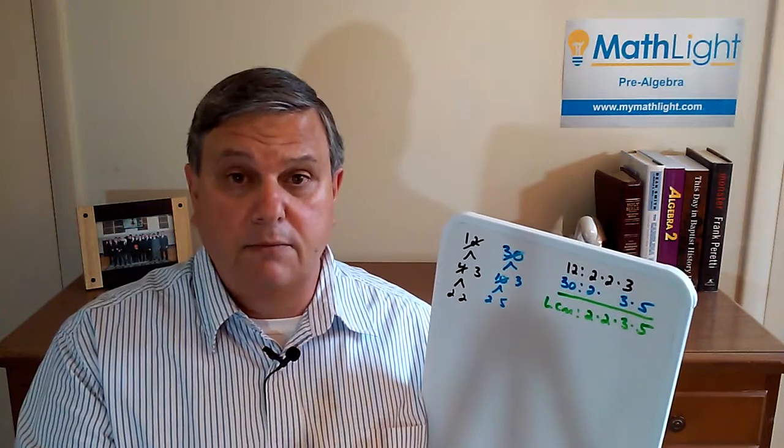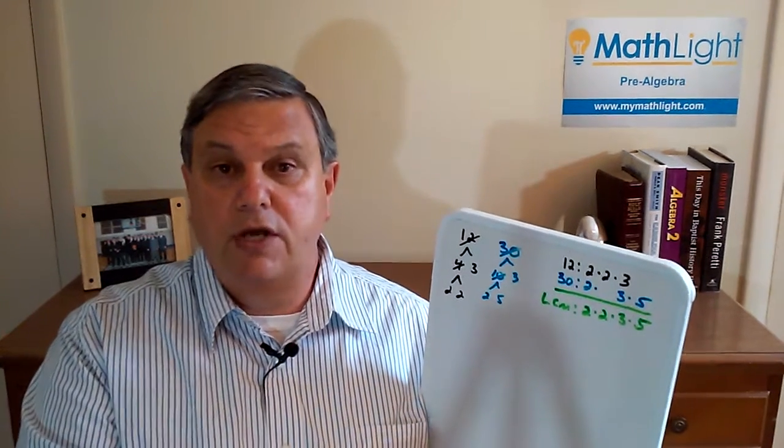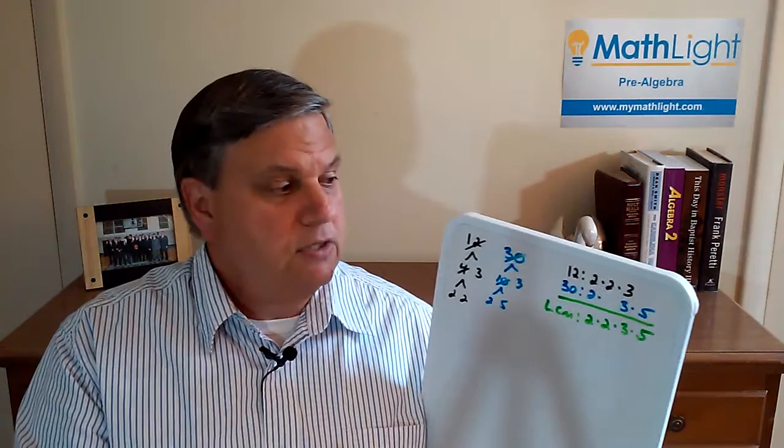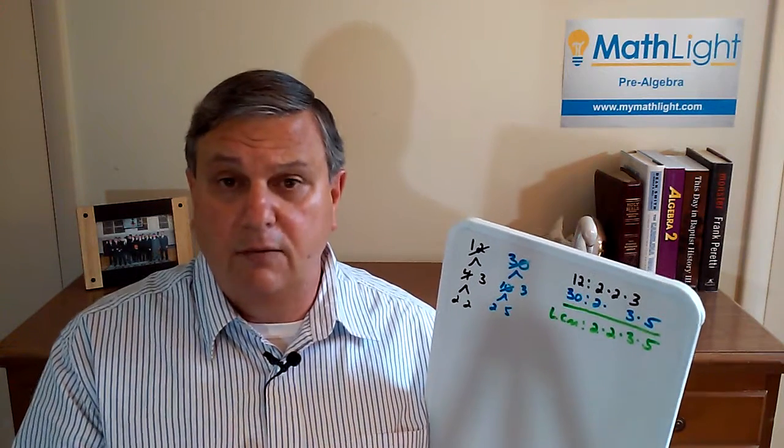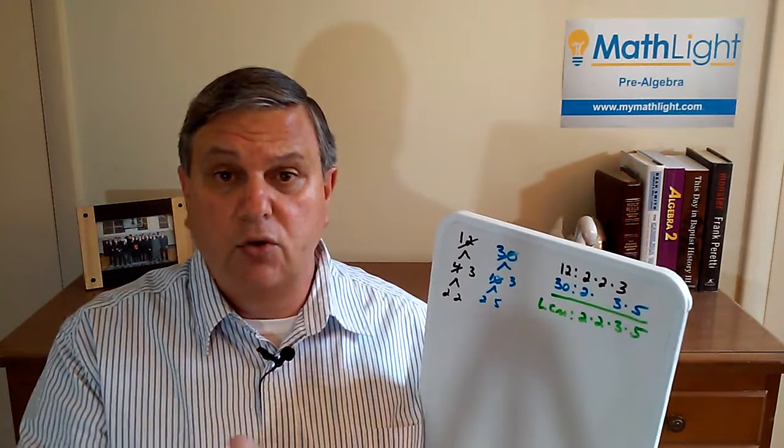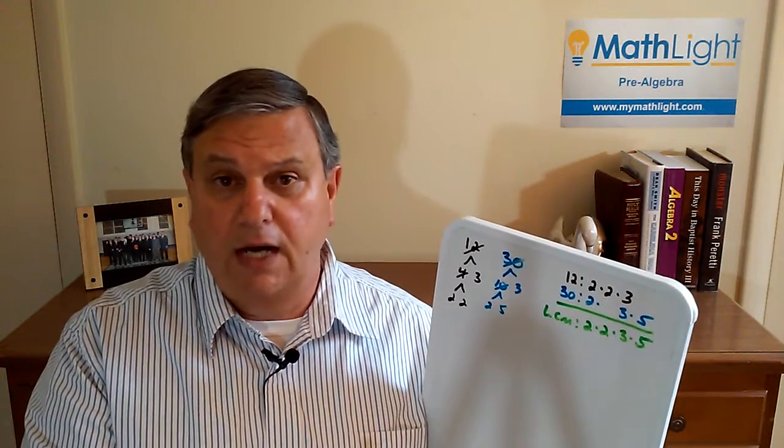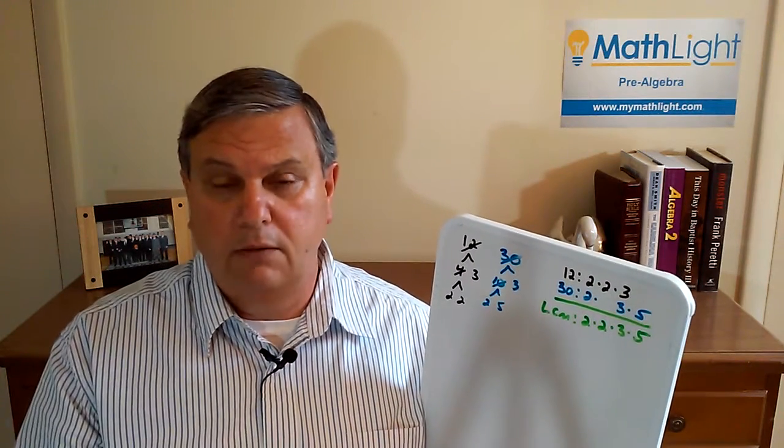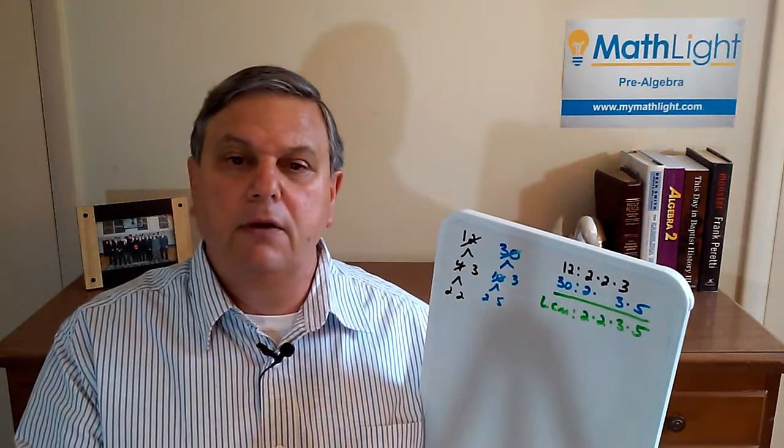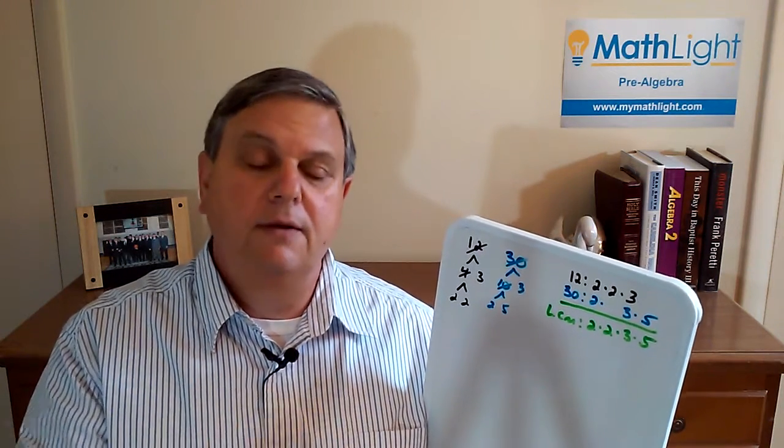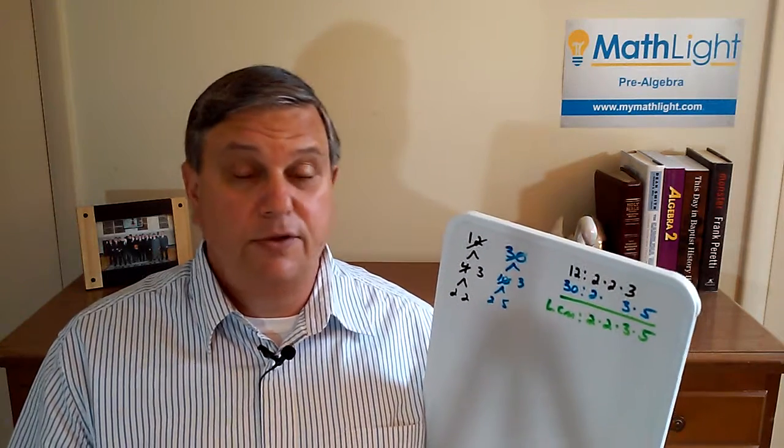...that you only put the numbers in their respective columns. Twos only go in a column of twos, threes only go in a column of threes, fives only go in a column of fives, etc. If there is no column for that number, then make one. But you can't put a five in a three column or a three in a two column. That's the key to everything—that's going to help you clearly get the union, and it's going to help you clearly get the intersection when you're doing a GCF.